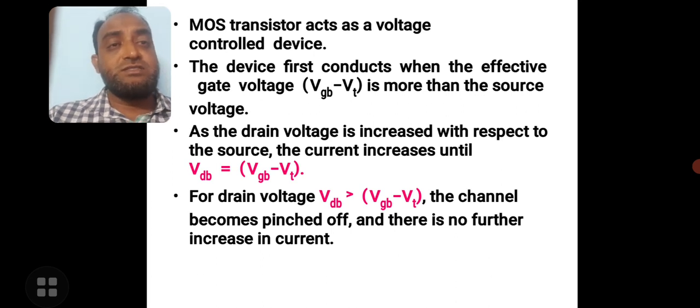The device operation can be governed by the two highlighted equations which are shown here. As the drain voltage is increased with respect to the source, the current will increase. Now that amount is where the condition is Vdb is equal to Vgb minus Vt, which is called as effective gate voltage.